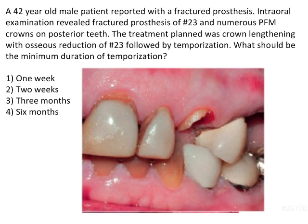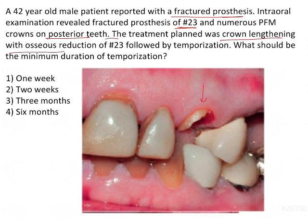This is a clinical case based question. A 42-year-old male patient reported with a fractured prosthesis. Intraoral examination revealed fractured prosthesis with tooth 23, which is the canine — shown in the image — and numerous PFM crowns on posterior teeth. The treatment plan was crown lengthening with osseous reduction for tooth 23, followed by temporization.